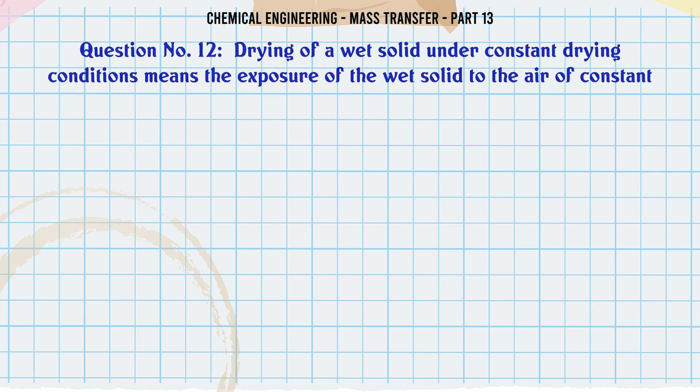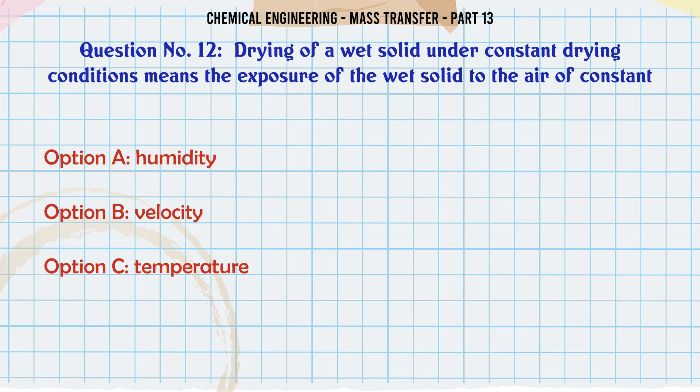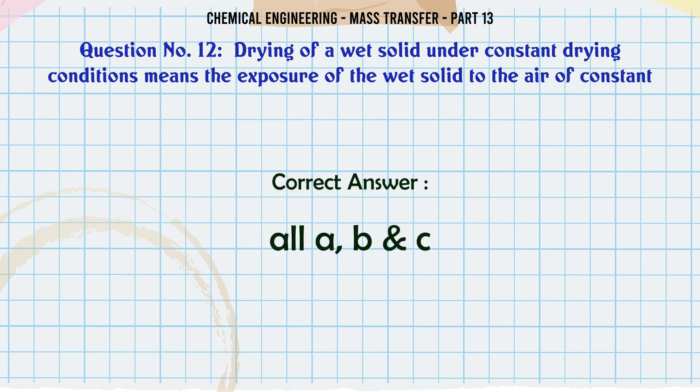Drying of a wet solid under constant drying conditions means the exposure of the wet solid to air of constant: A. Humidity. B. Velocity. C. Temperature. D. All A, B, C. The correct answer is: All A, B, C.